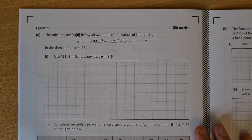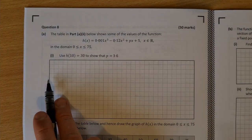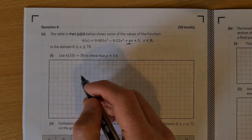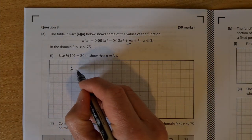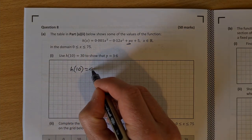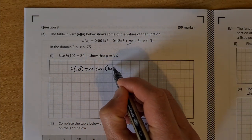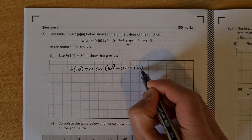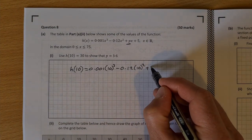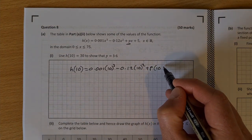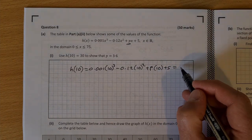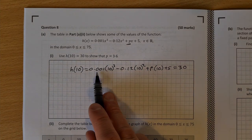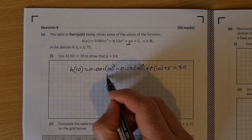We'll be dealing with that in a minute. But the first bit is to just do h of 10 equal to 30 to find this value here, p is equal to 3.6. So h of 10 is equal to 0.001 times 10 cubed minus 0.12 times 10 squared plus p times 10 plus 5, and that should be equal to 30. So what we have here, 0.001 times 10 cubed, that's equal to 1.